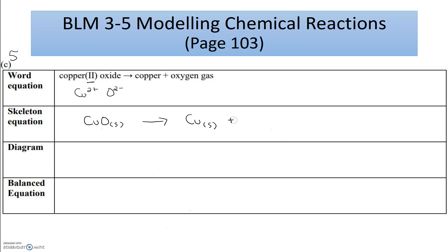It reacts and produces copper — the element — so I've got one copper atom. Plus oxygen gas. Oxygen, when found as an element, is one of our diatomic elements, which means it comes in pairs — that's why I'm writing the subscript of 2.